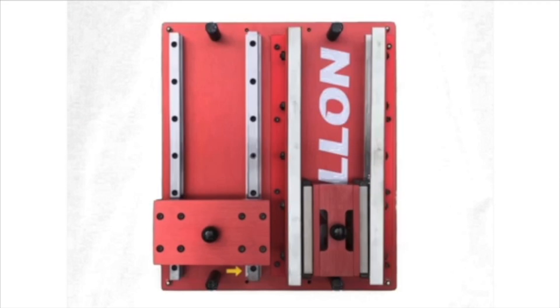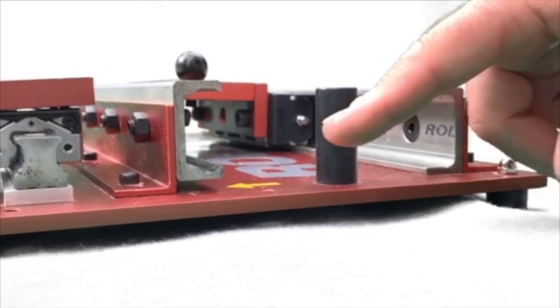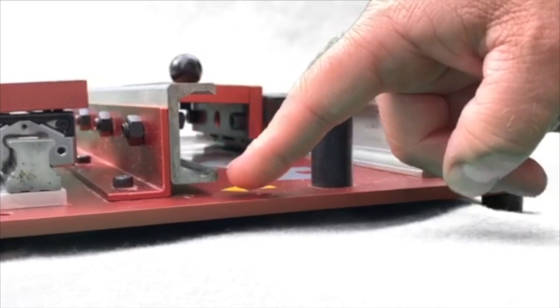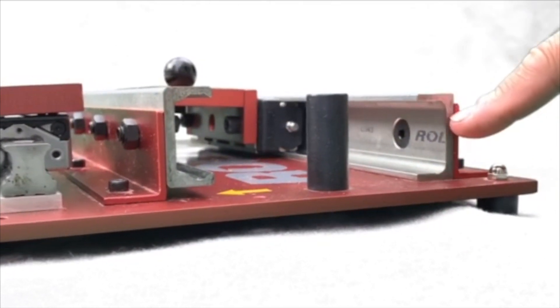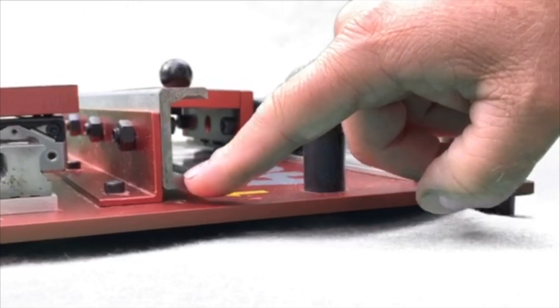Hi, this is the Rollon compact rail misalignment demonstration fixture. On this side you'll see that this rail is elevated four millimeters and this rail is mounted flat to the plate with two different rail configurations.